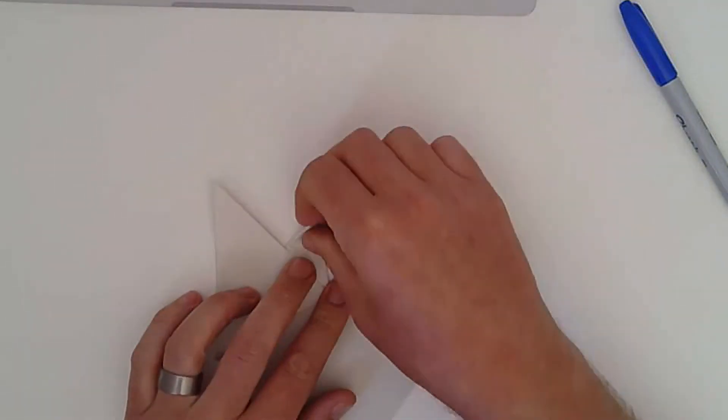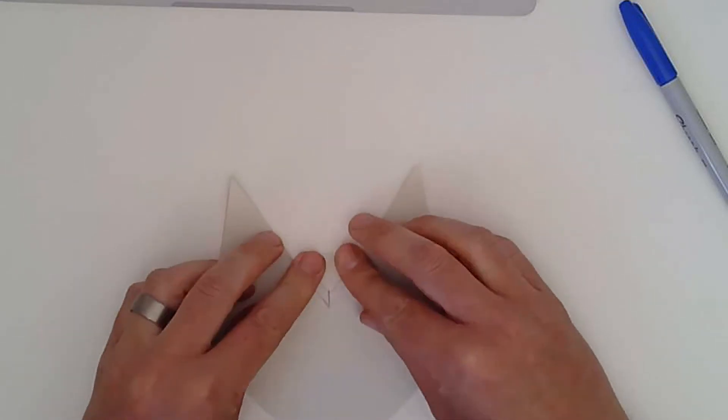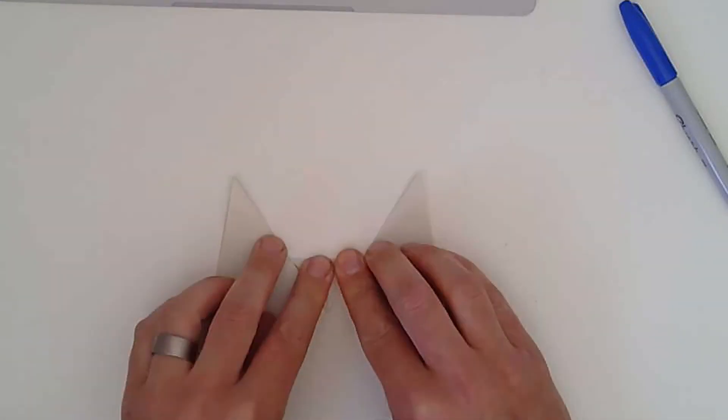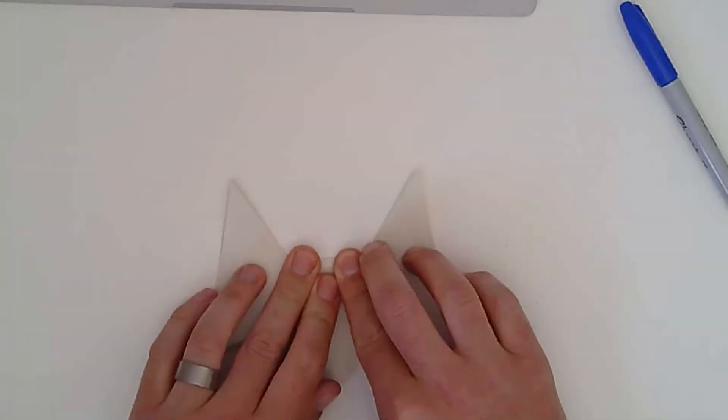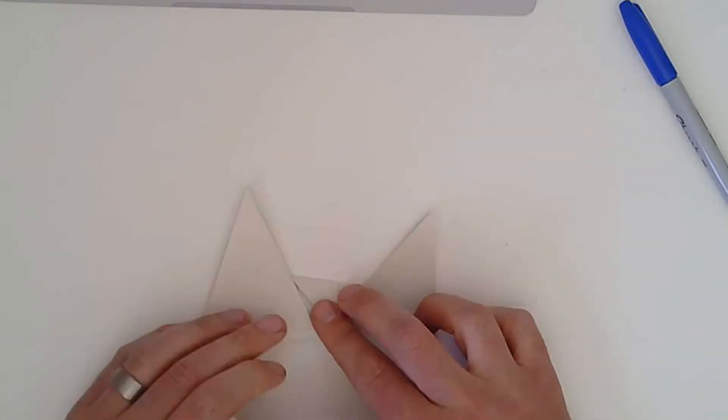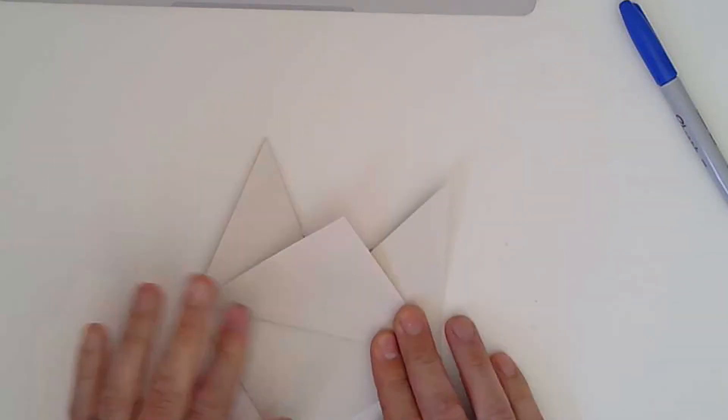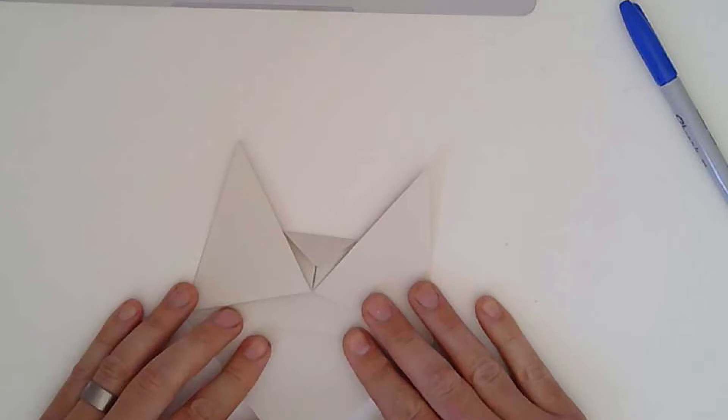So what we do then, I'm just going to fold that bit down. Doesn't matter if it doesn't meet perfectly. So end up with this. Then what we're going to do is fold this bit, just one half up, get a bit of a folded line, and then fold it back down again.